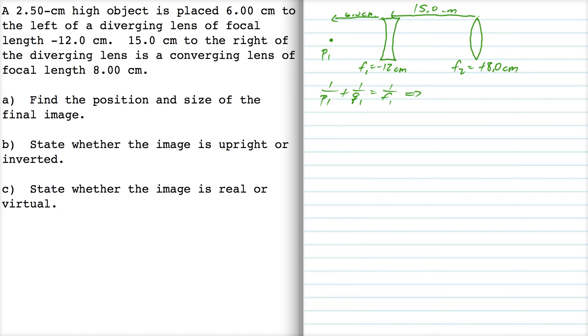So that's 1 over 6 plus 1 over Q1 is equal to 1 over negative 12. So 1 over Q1 is negative 1 over 12 minus 1 over 6, which is negative 3 over 12. Therefore Q1 is negative 4 cm.